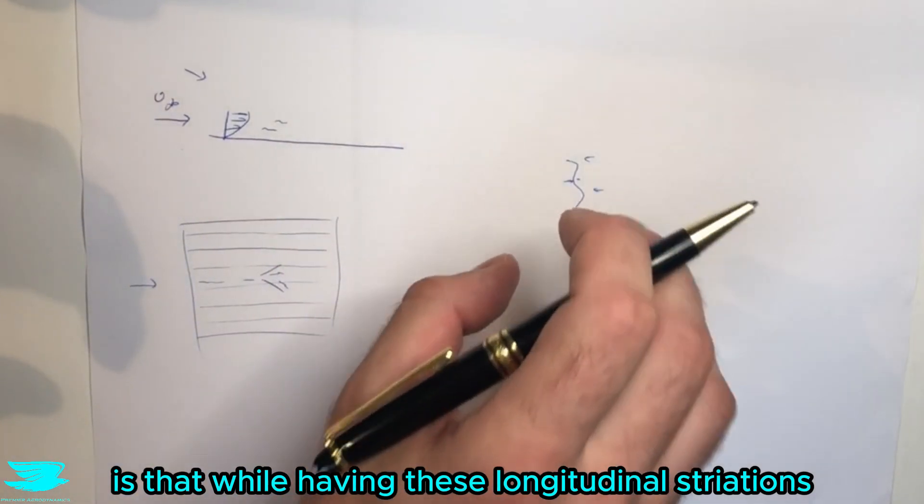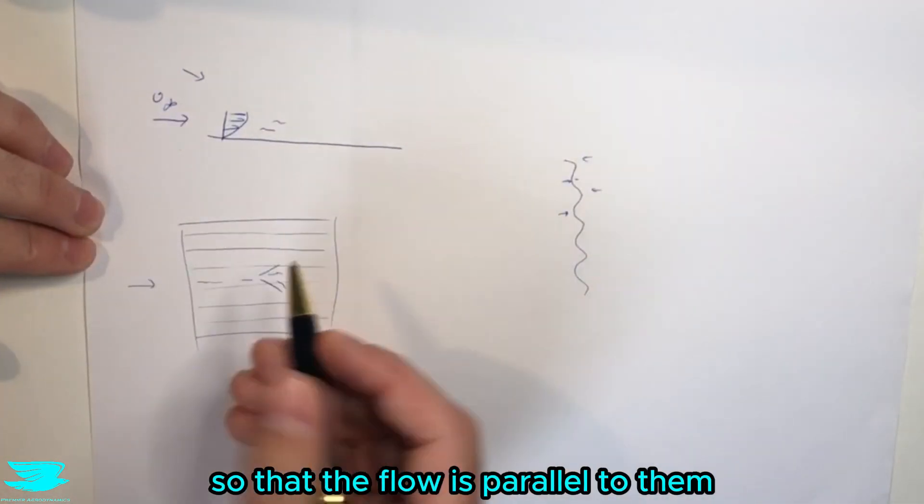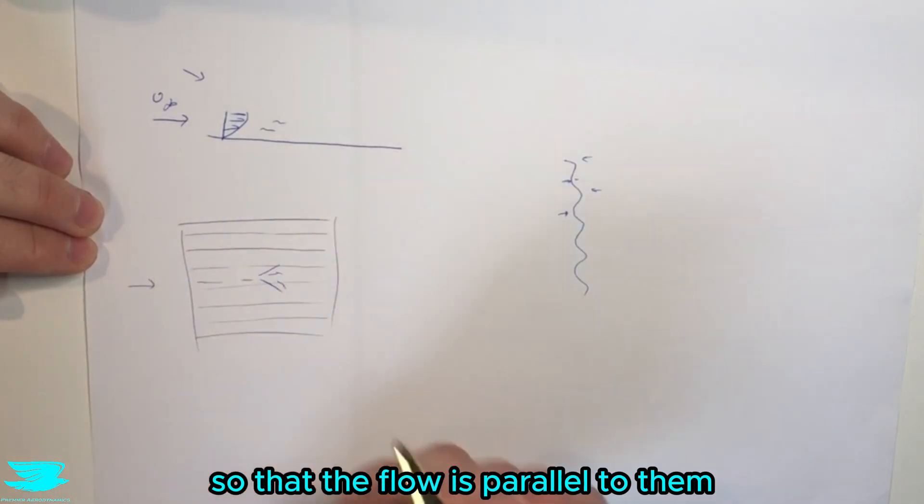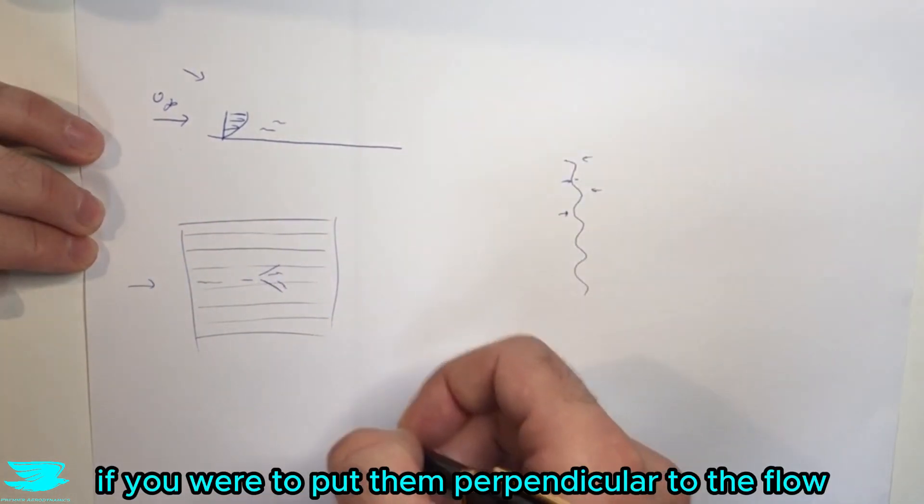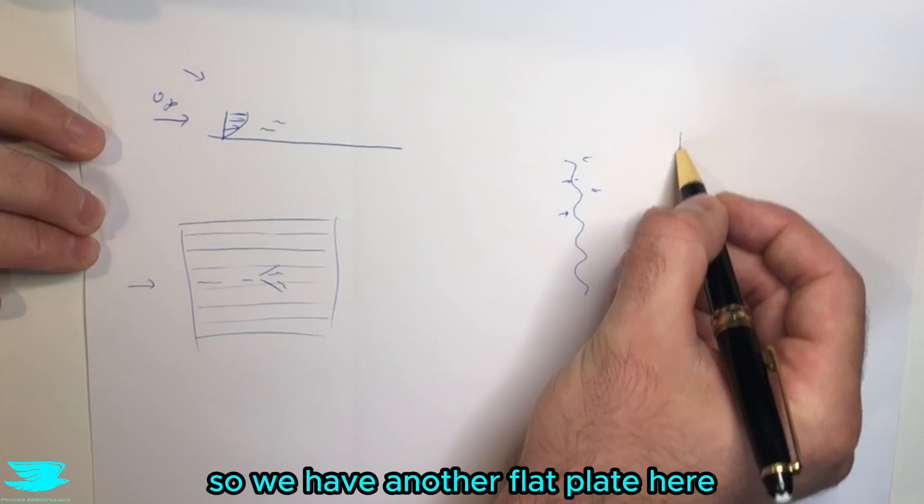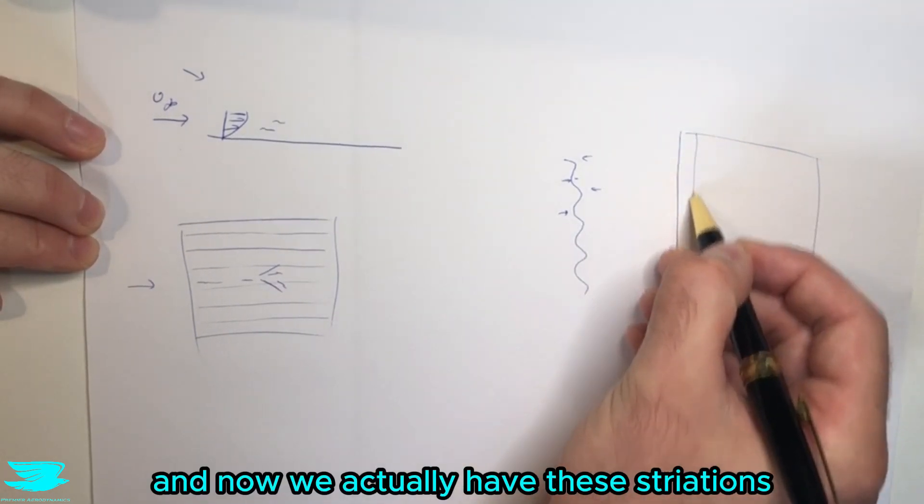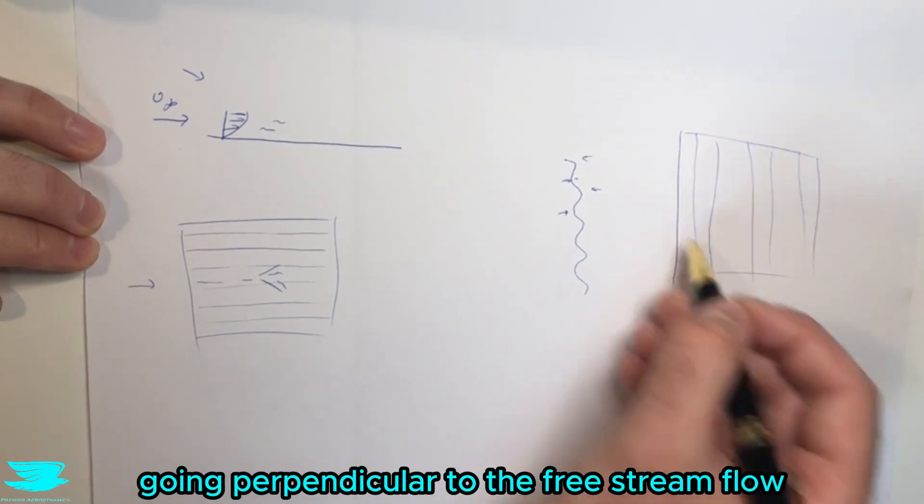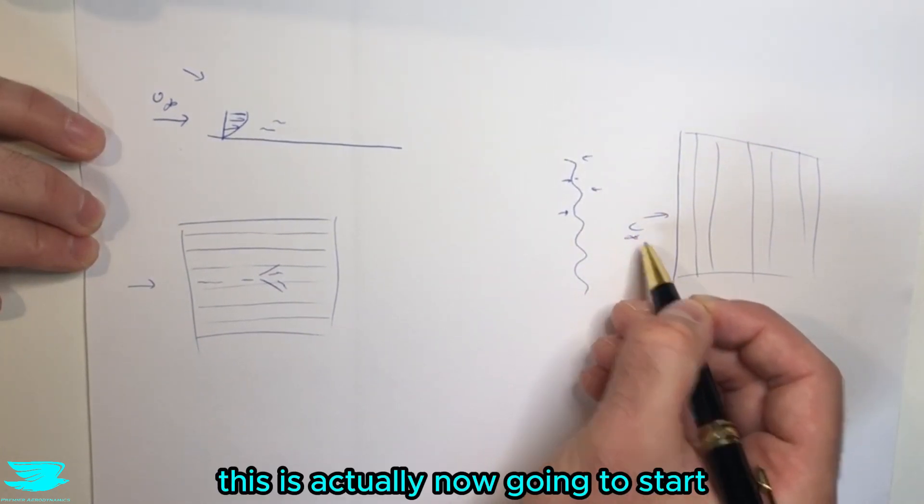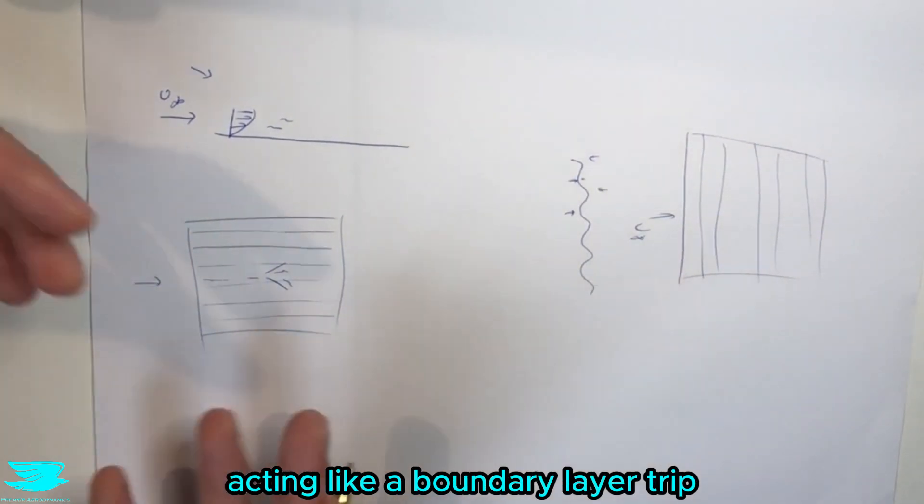while having these longitudinal striations going straight in longitudinally so that the flow is parallel to them, if you were to put them perpendicular to the flow, so we have another flat plate here and now we actually have these striations going perpendicular to the freestream flow, this is actually now going to start acting like a boundary layer